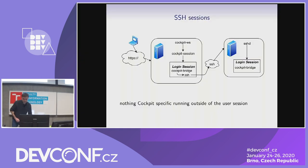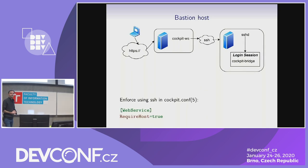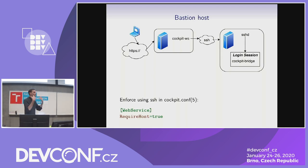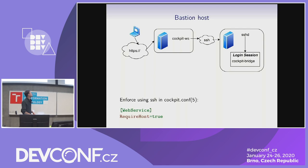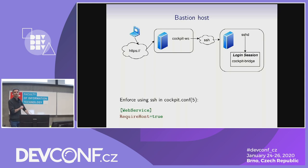You can take this principle to the max if you completely disable local sessions with cockpit-session — we call that a bastion host. You pick one computer in your network to be the Cockpit web server, and this could even run in a container if you want, since it doesn't have a lot of privileges — it just needs to open the port and call SSH. Then completely disable local logins so all the machines you administer are not affected.